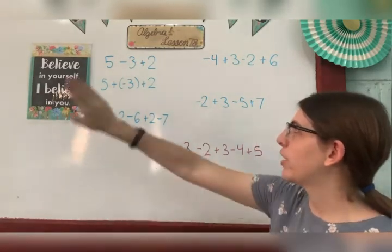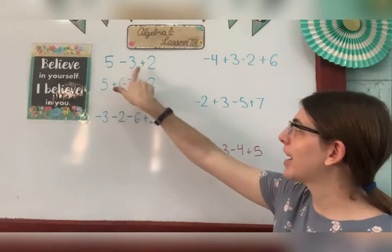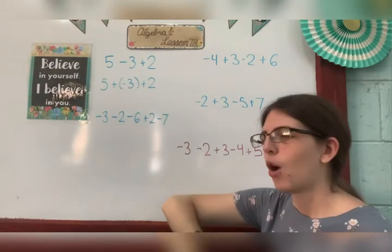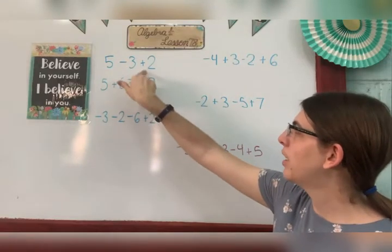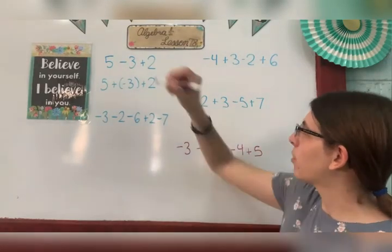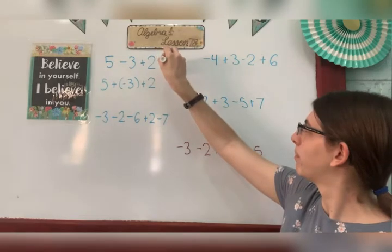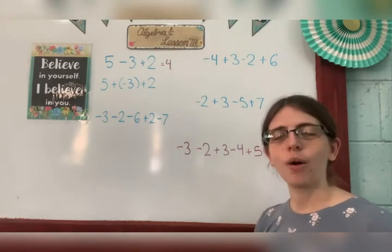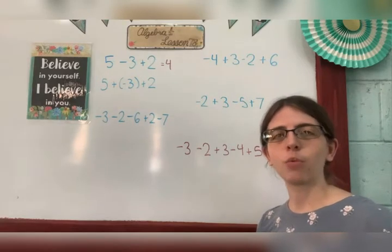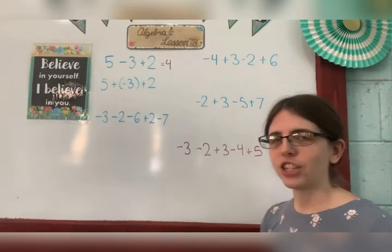Now first I want to draw your attention to this problem, 5 minus 3 plus 2. We all know that this sign means minus. 5 minus 3 we know is 2, plus 2 we know is 4, no problem. Well there's something very important about subtraction that you need to know, and that's that we can look at subtraction in a different way. We call it algebraic addition.